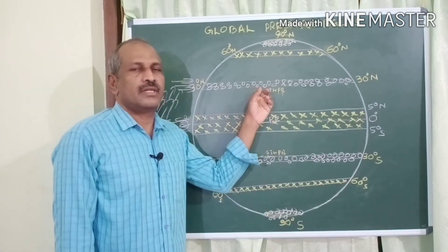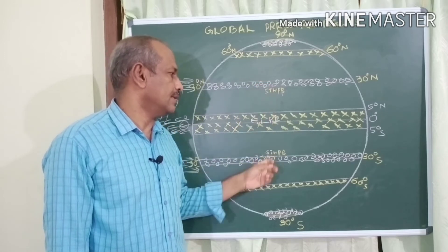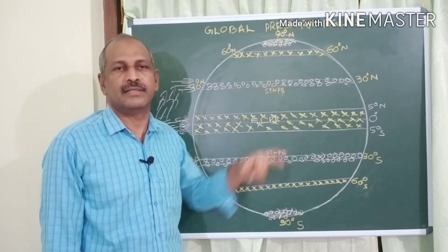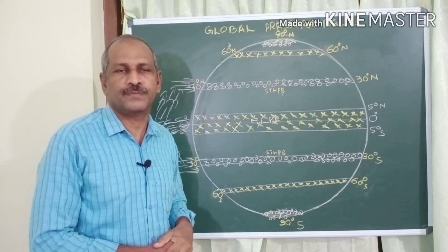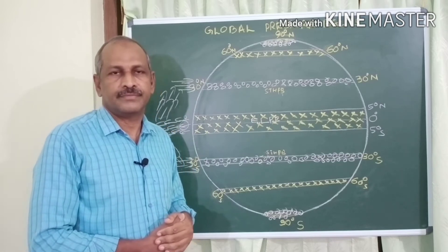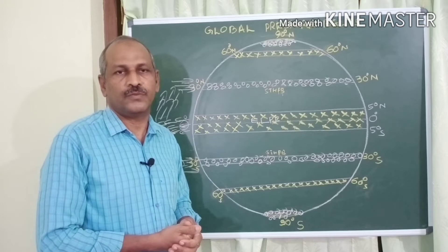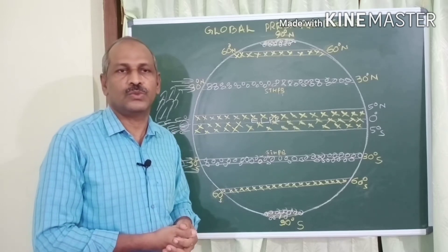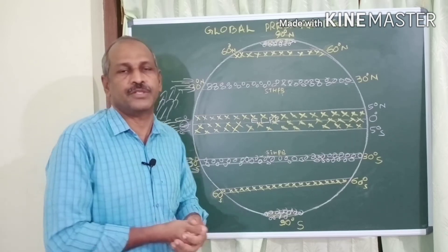The 30 degree North and 30 degree South latitudes, or the Subtropical High Pressure Belt, are also called horse latitudes. There are a few stories behind this name — explore the internet to find out the stories of horse latitudes.